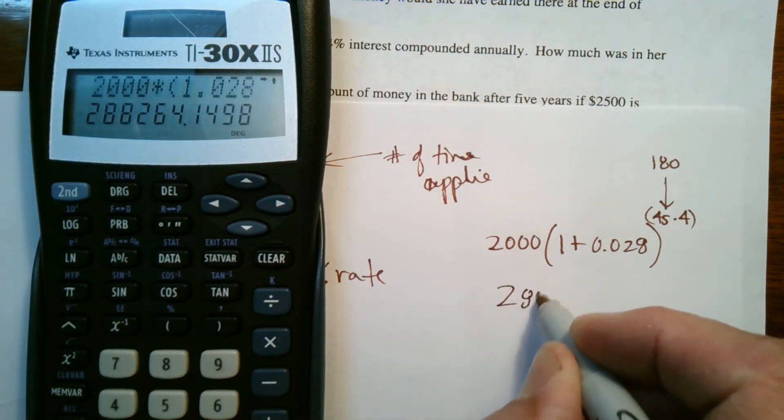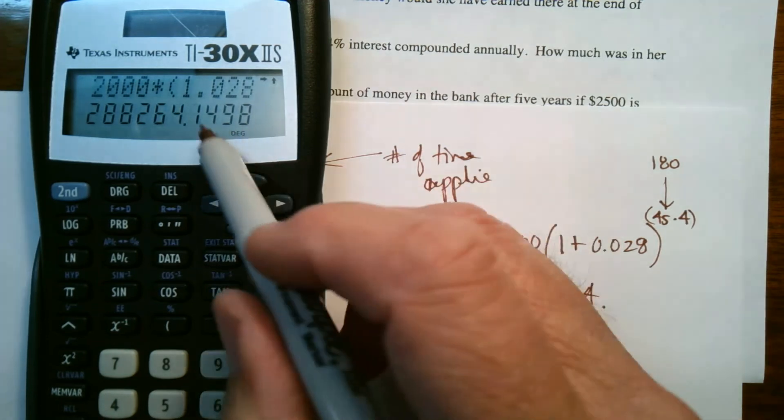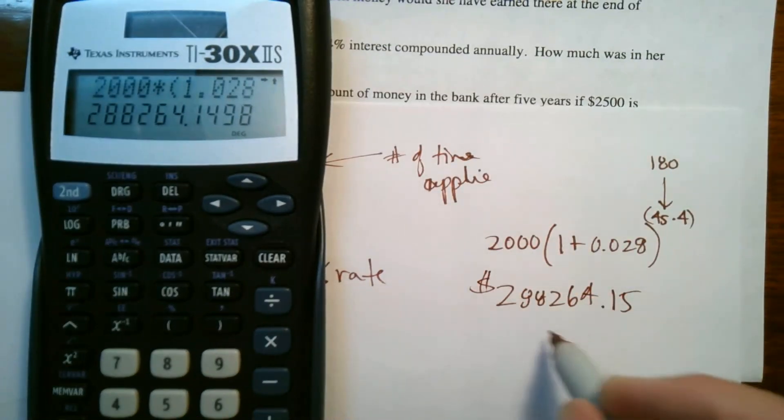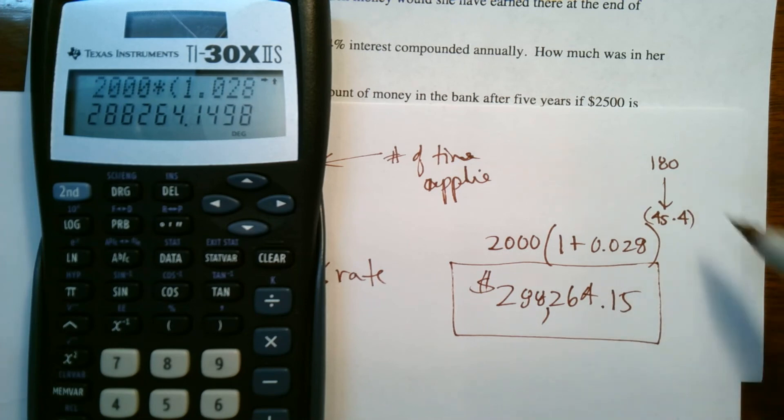So our answer, 8, 8, 2, 6, 4, and to the nearest penny we round up there. So it'd be 15. So it's $288,264.15. So that's how much it'll be if we're dealing with 45 years, four times a year compounded. That's not a bad deal. Start with 2000, end up with $288,264.15. All right, there we go.